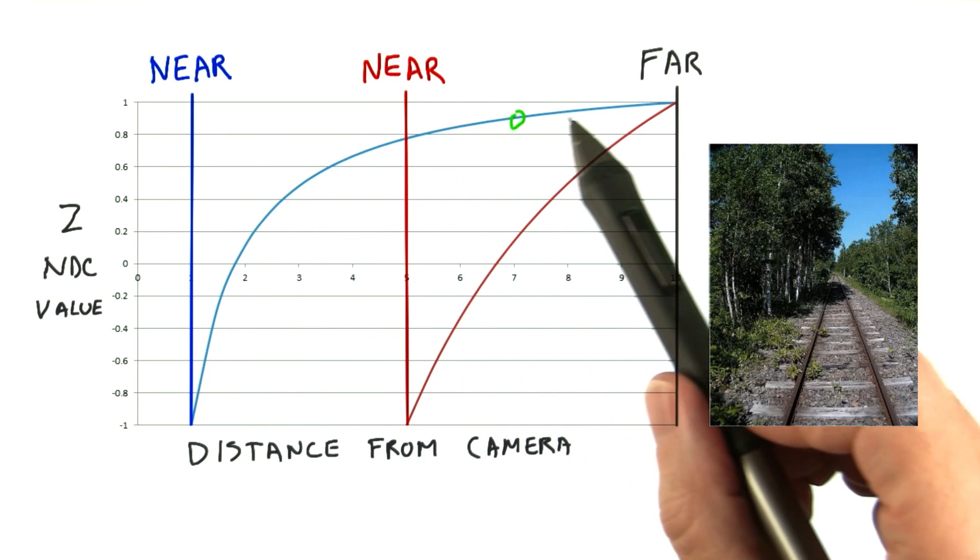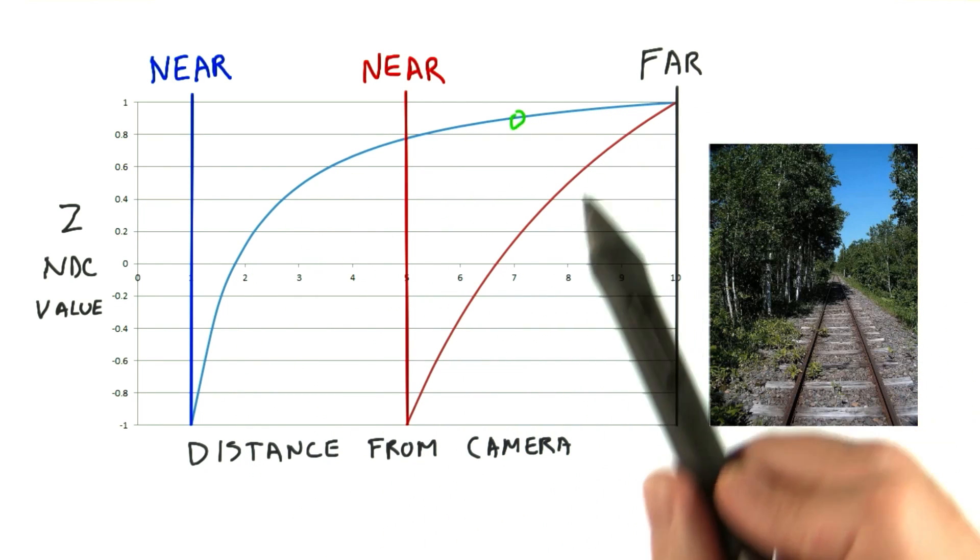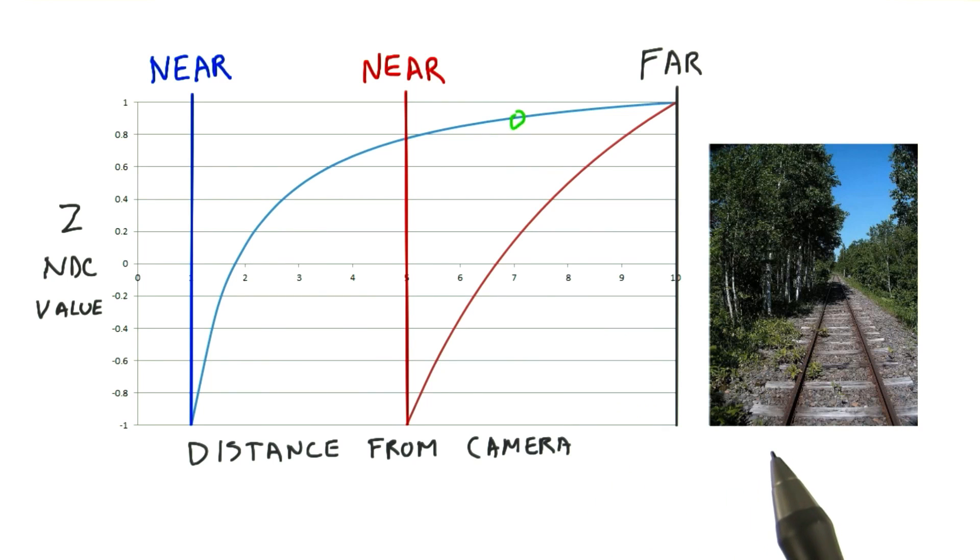The reason the z-depth values vary in this non-linear way has to do with interpolation. We want straight lines to stay straight when using perspective projection. I won't prove it to you here, but think of train tracks disappearing into the distance.